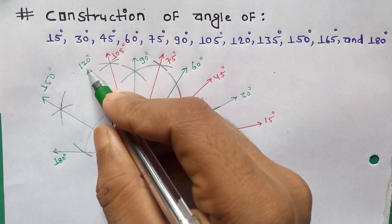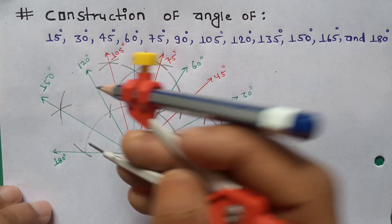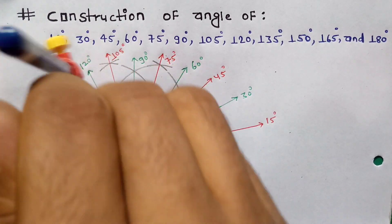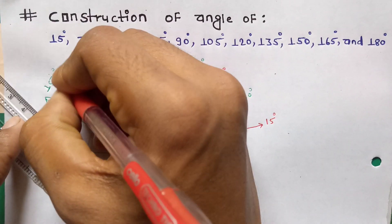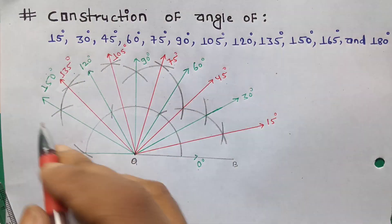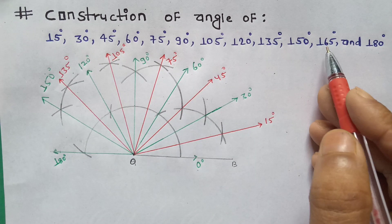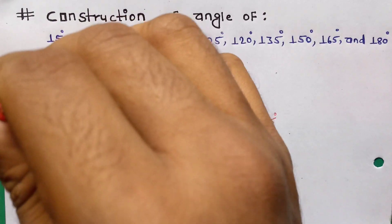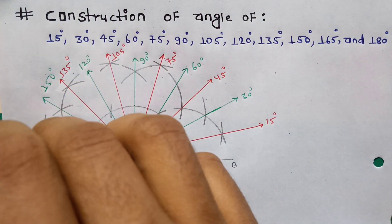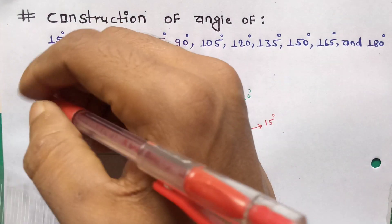Because 180 plus 120 is 300, and 300 divided by 2 is 150 — so from point 120 and 180 it will be 150. Then for 135, from point 150 we cut and from 120 we cut to get 135. This will be 135 degrees. To draw 135, first construct 150, then it is easy to draw 135. Now for 165 degrees, from point 150 cut the line and from 180 degrees cut the line — we get 165 degrees. This is the proper method to draw all the angles.